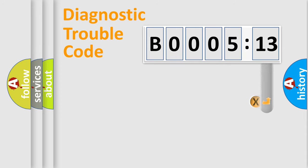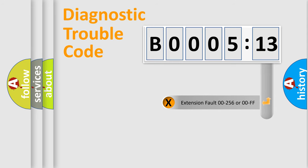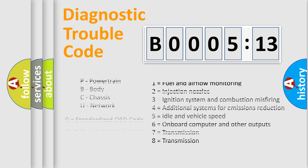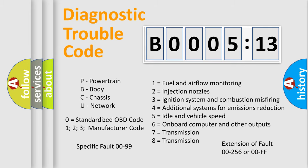The add-on to the error code serves to specify the status in more detail — for example, a short to ground. Let's not forget that such a division is valid only if the second character code is expressed by the number zero.